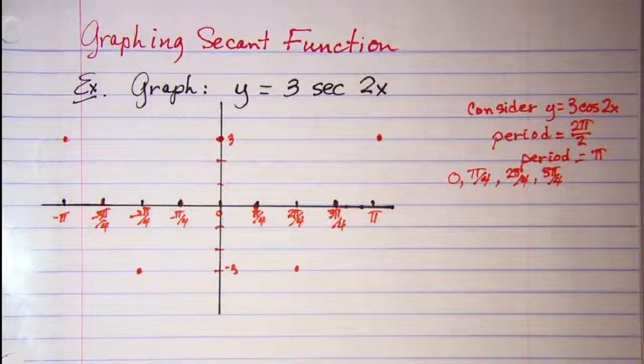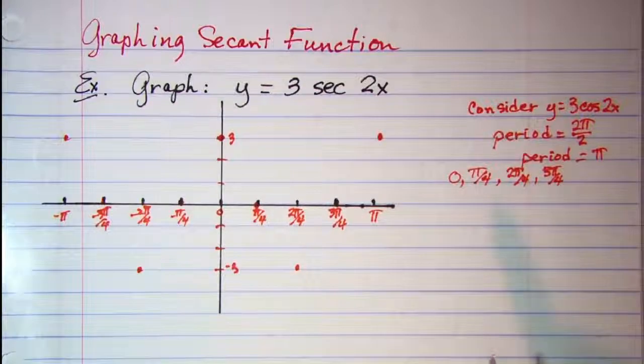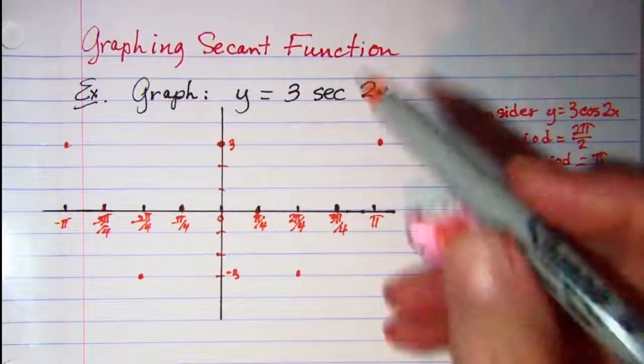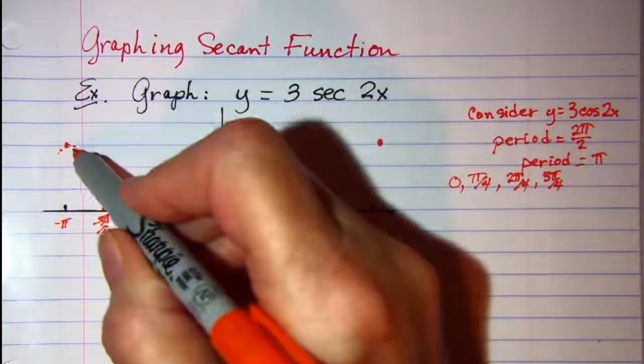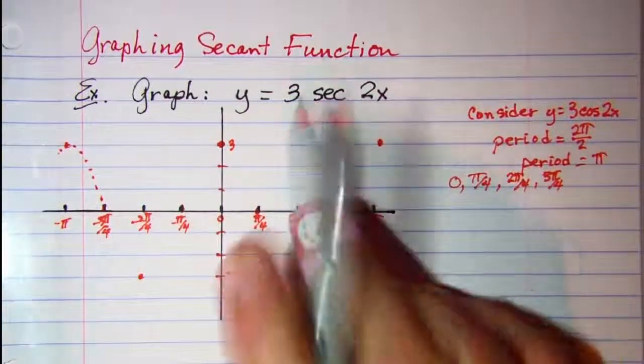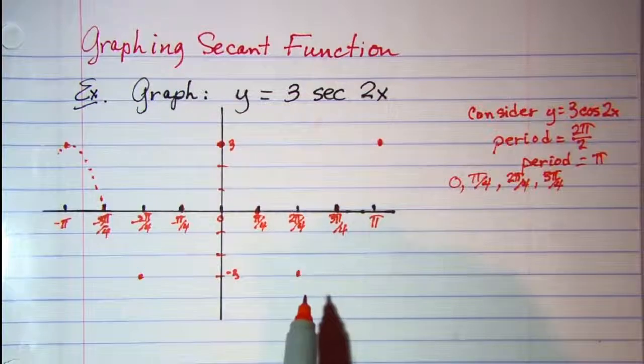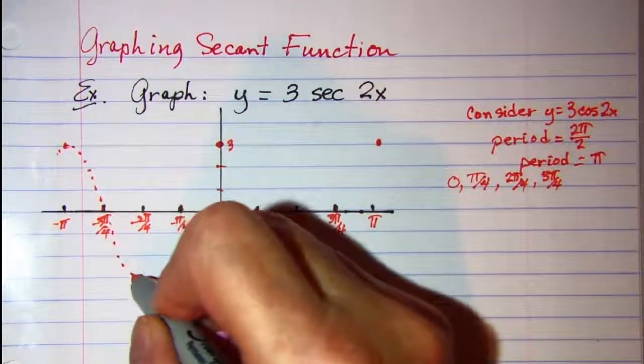So this is my cosine curve and I'm going to draw it with a dotted line so that you can see it better. You don't have to because basically for our secant curve we only need the max and min points and where it crosses the axis to get our asymptotes.